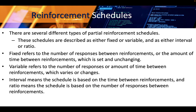There are several different types of partial reinforcement schedules, described as either fixed or variable, and as either interval or ratio. Fixed refers to the number of responses between reinforcements, or the amount of time between reinforcements, which is set and unchanging. Variable refers to the number of responses or amount of time between reinforcements, which varies or changes. Interval means the schedule is based on time between reinforcements, and ratio means the schedule is based on the number of responses between reinforcements.